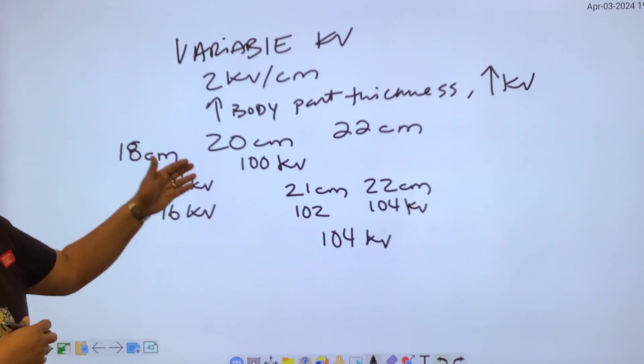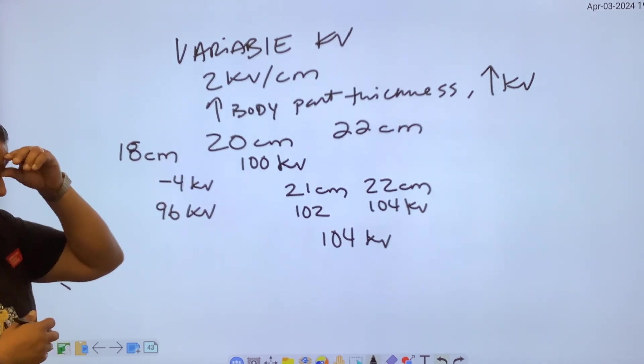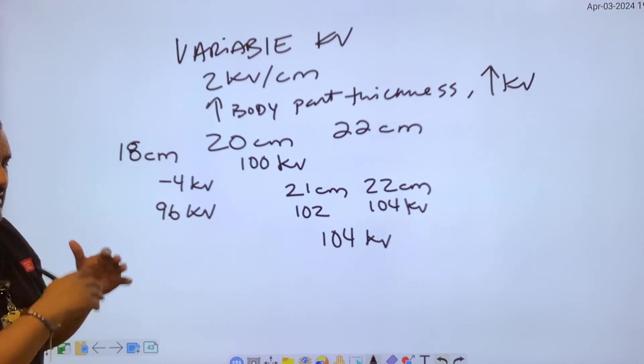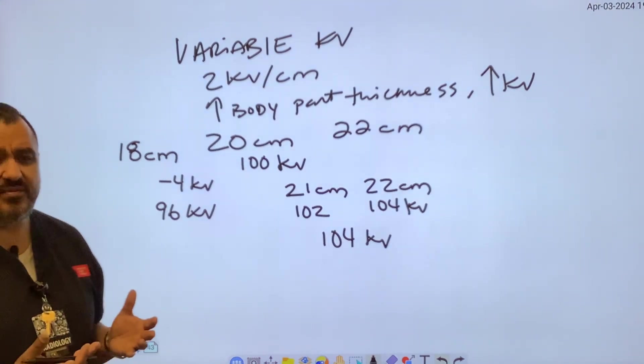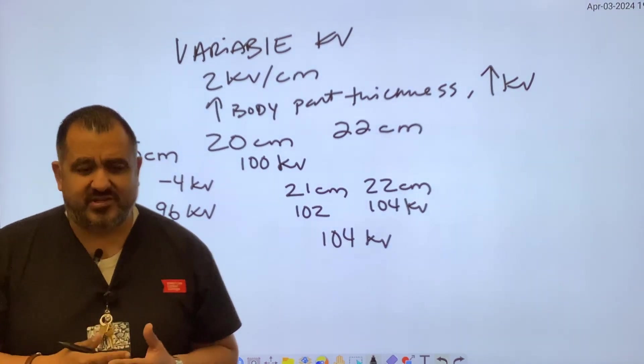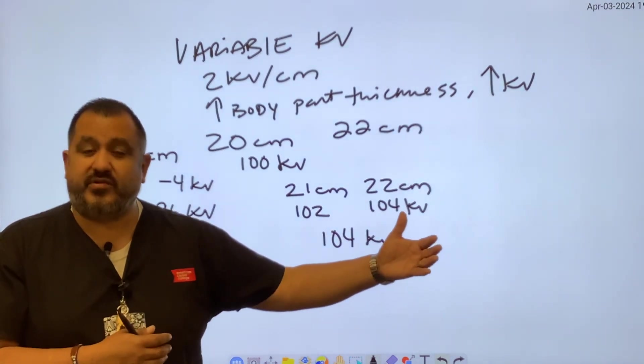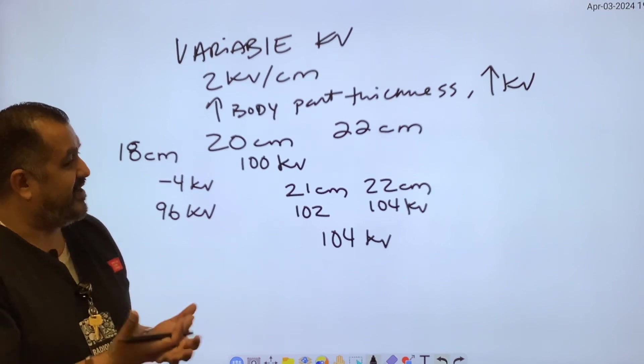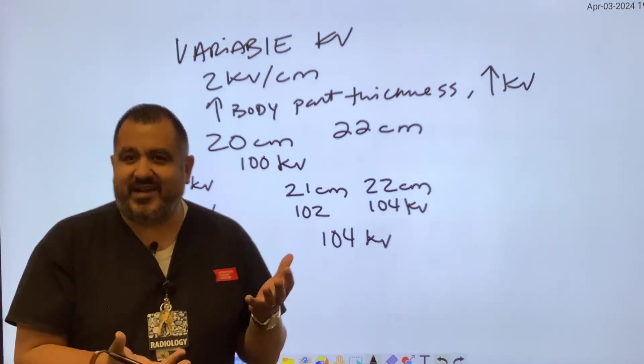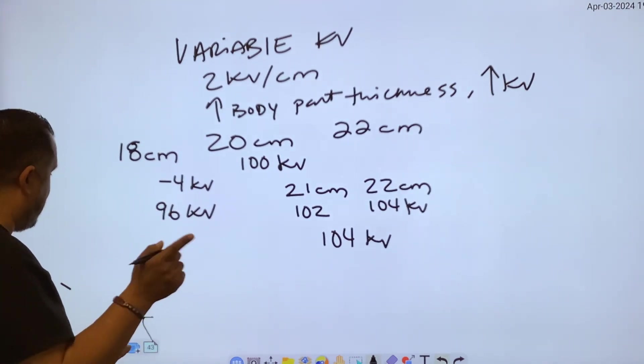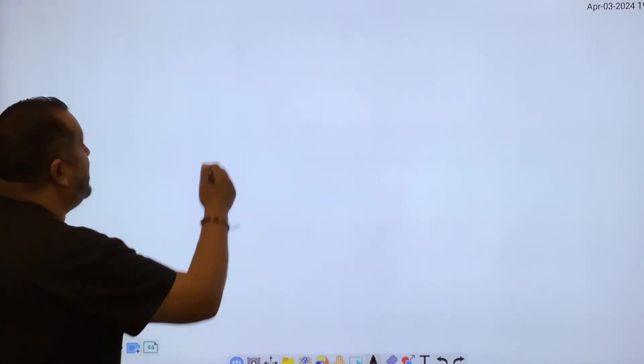I like to use variable KV instead of fixed KV because with fixed KV, it stays the same, but you have to go up and down in mAs. And when you go up in mAs, you're having to use an increase of exposure for the patient. But again, we use the term Goldilocks - it has to be just right. It has to be a perfect recipe for your technique.